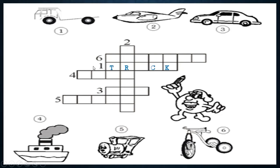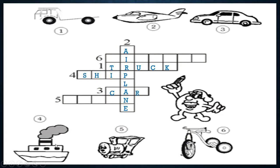We are going to start. Number one: truck. This is a truck. You have to write — truck. Number two: airplane. This is an airplane. Number three: car — this is a car. Number four: ship — this is a ship, este es un barco.